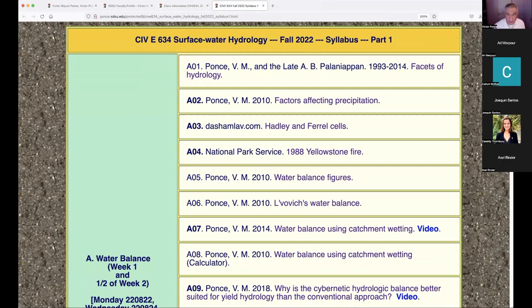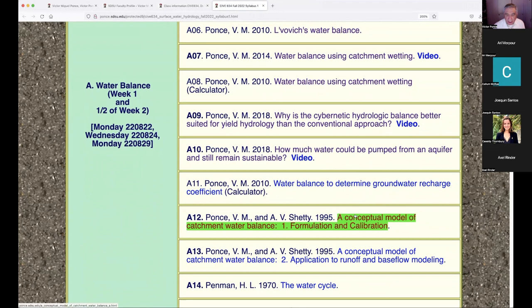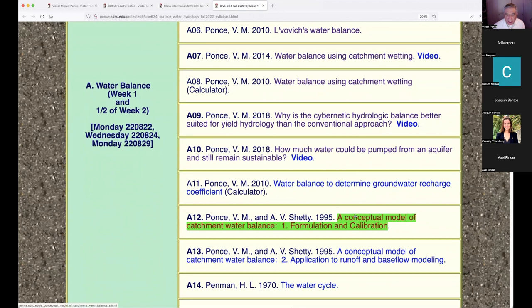We're going to go to the syllabus and at this point I'm going to briefly talk about papers A12 and A13. A conceptual model of catchment water balance formulation and calibration, and the second one is application to runoff and baseflow modeling. This is a corollary of the first one. These two papers were published in the journal Hydrology, a European journal, in 1995.